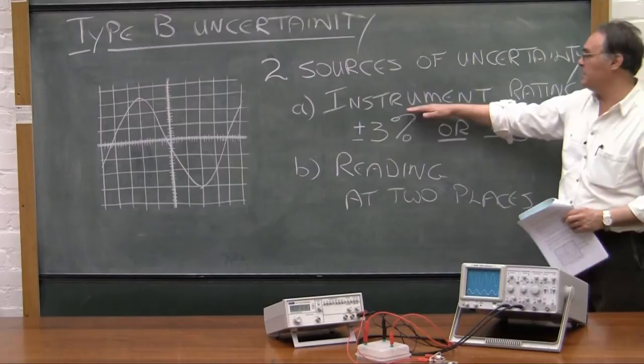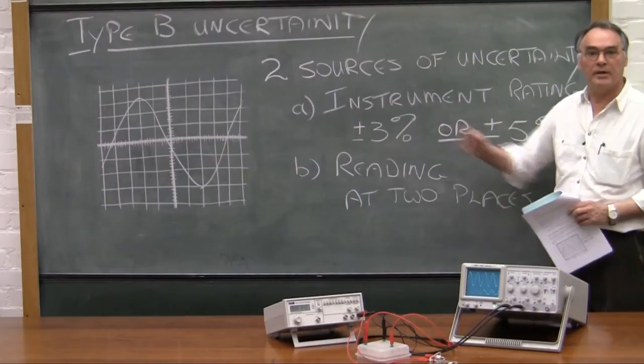The first source is the instrument rating and the second source is the actual reading that you're going to get on the screen.